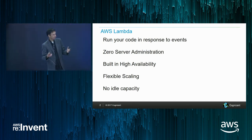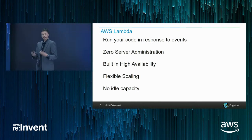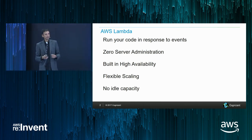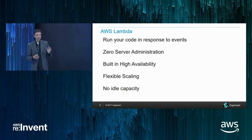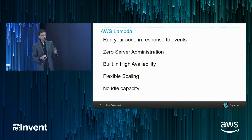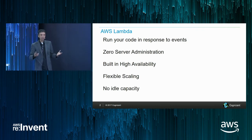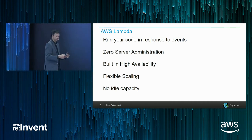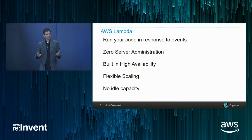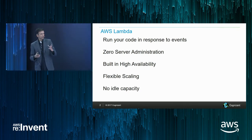So what is AWS Lambda? Some of you already know, but I want to make sure everyone understands. Lambda is based on serverless computing. Five key things: it runs your code in response to events — events from AWS services like S3. Zero server administration, so you don't have to worry about provisioning and maintaining your servers. Build your code in Python, Java, .NET, or C-sharp and upload it. Built-in high availability and flexible scaling — you don't have to design your deployment architecture for that, it's built into Lambda. And no idle capacity, because Lambda is made for short-running tasks.